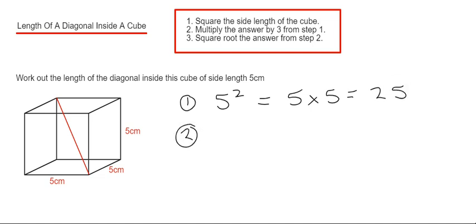So step two then is we need to multiply this answer by three. So 25 times three is 75.